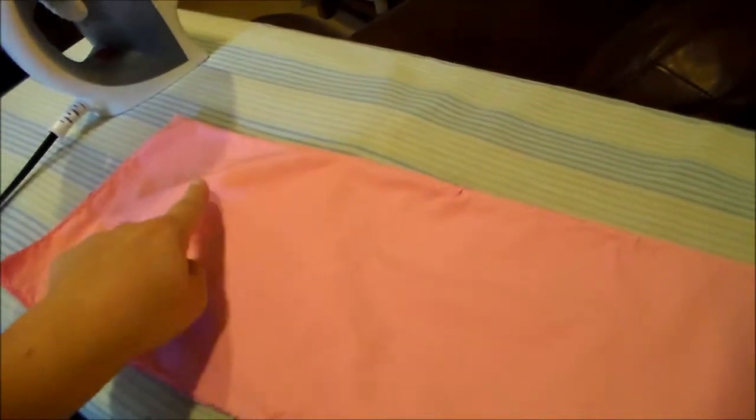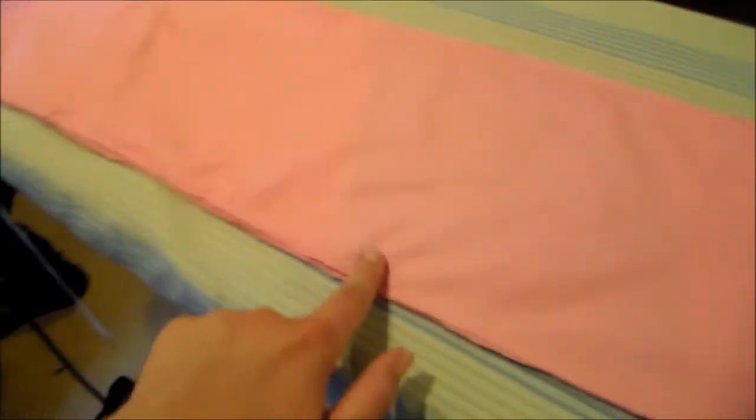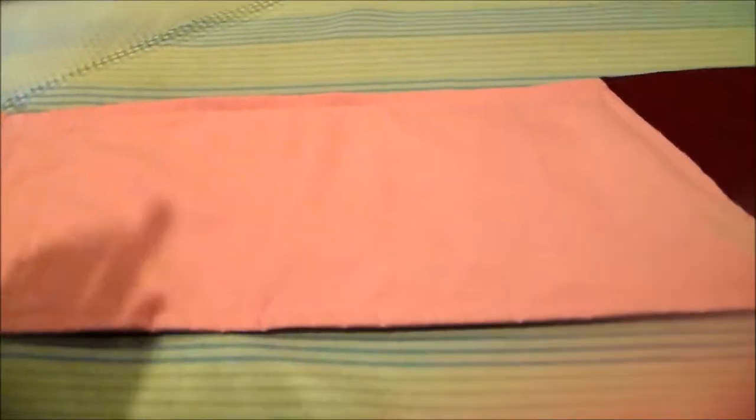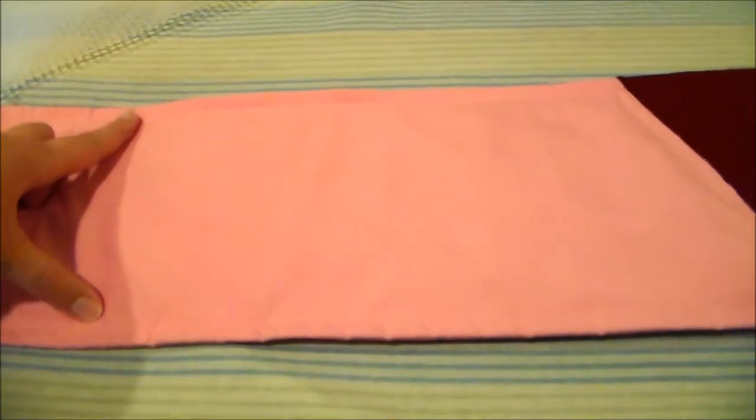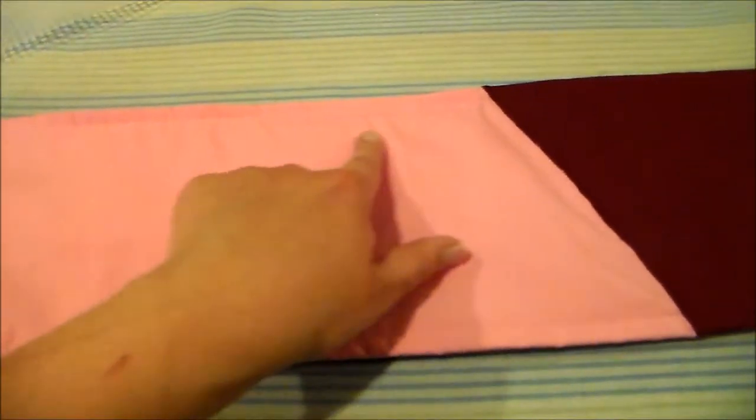Put the right sides together, and then you're going to sew up and down along each side, leaving the ends open. Now you're going to turn your obi right side out, and then topstitch along the sides.